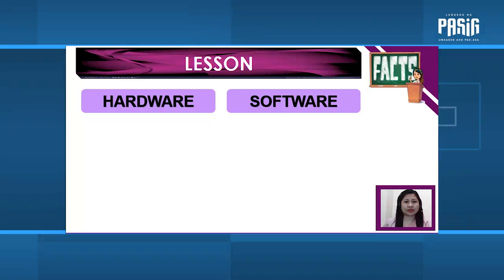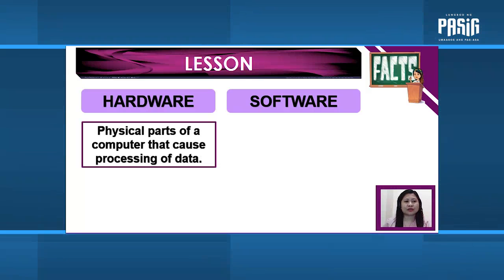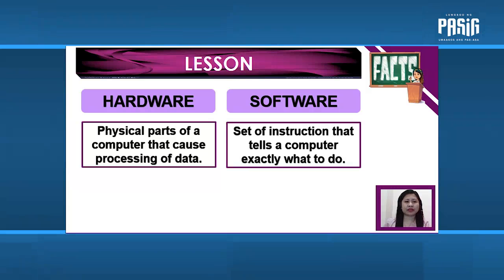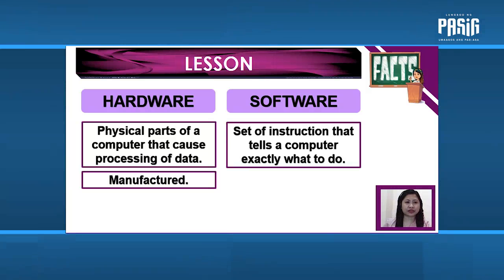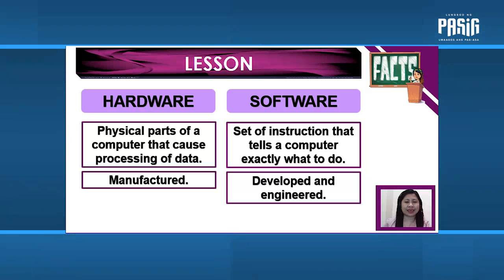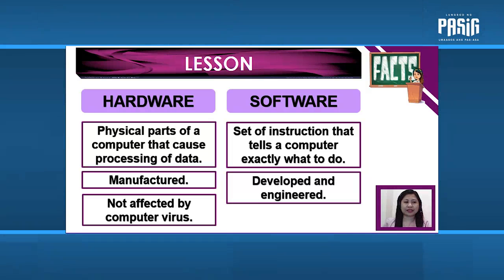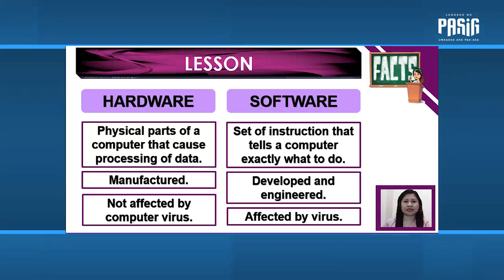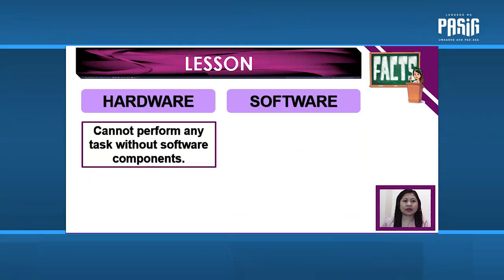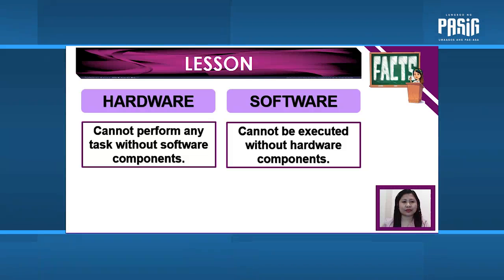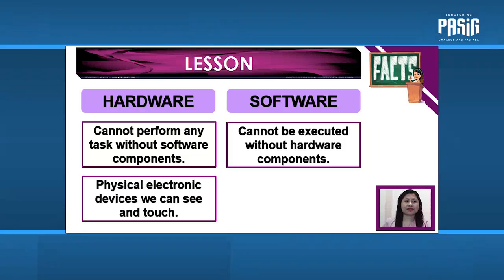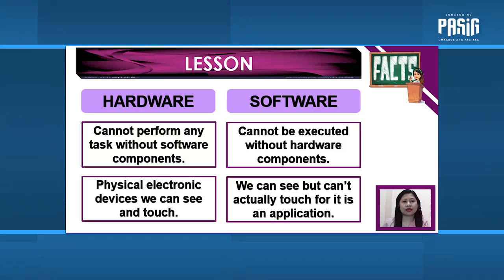To differentiate hardware and software components further: hardware components are physical parts of a computer that cause processing of data, while software is a set of instructions that tells a computer exactly what to do. Hardware is manufactured, while software is developed and engineered. Hardware is not affected by computer virus, while software components are affected by virus. Hardware cannot perform any task without software, while software cannot be executed without hardware. Hardware consists of physical electronic devices we can touch, while software is something we can see but cannot actually touch.